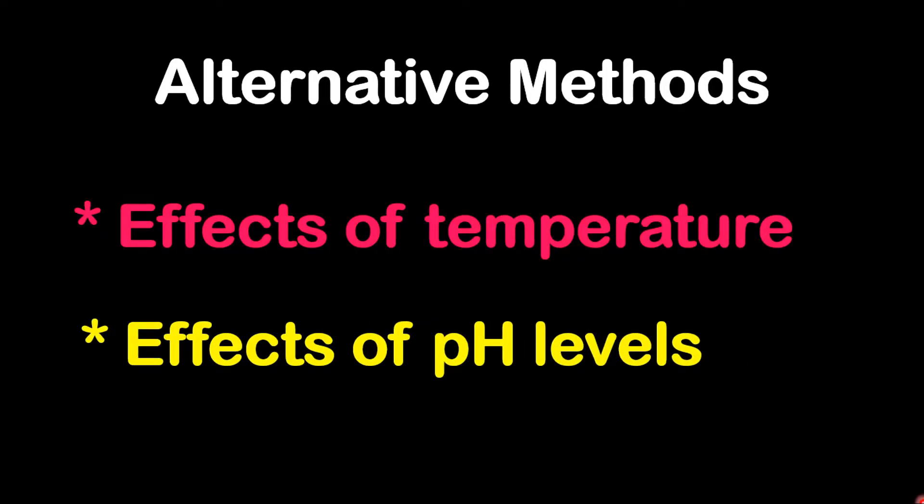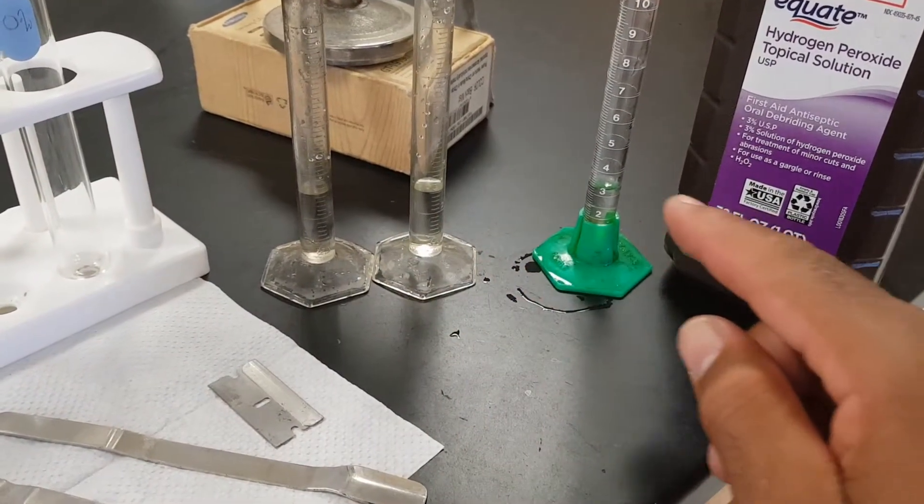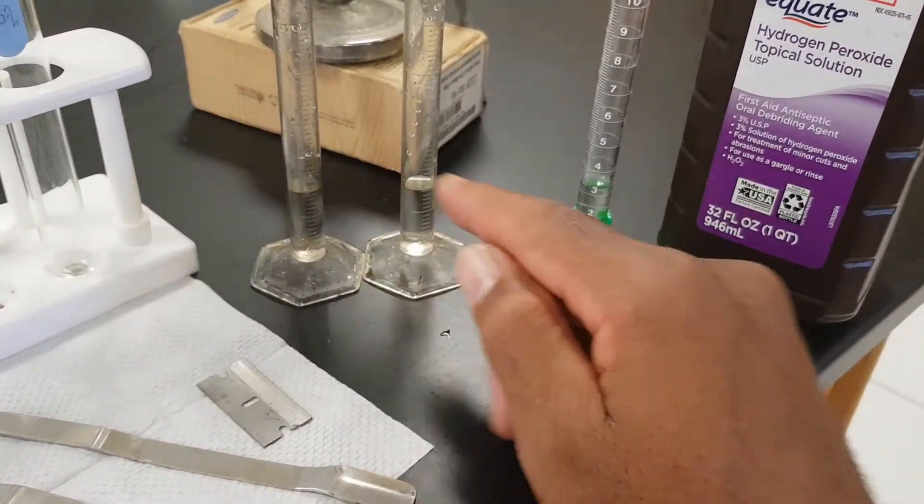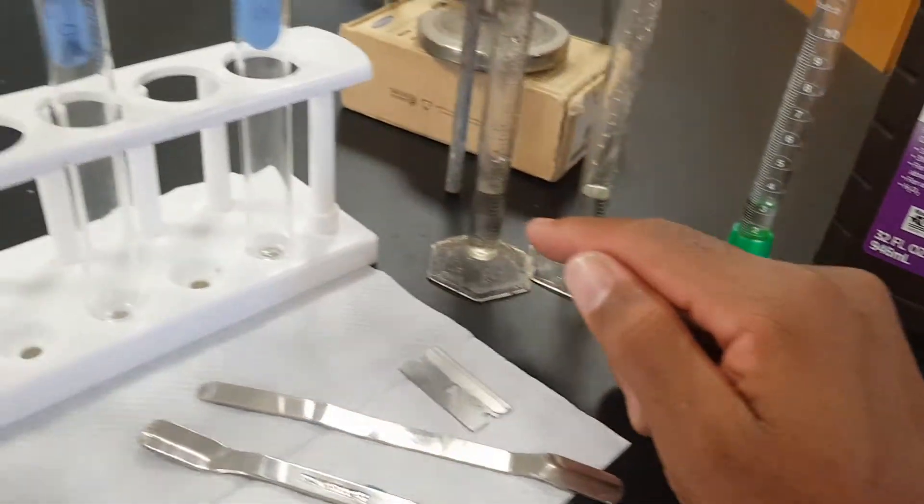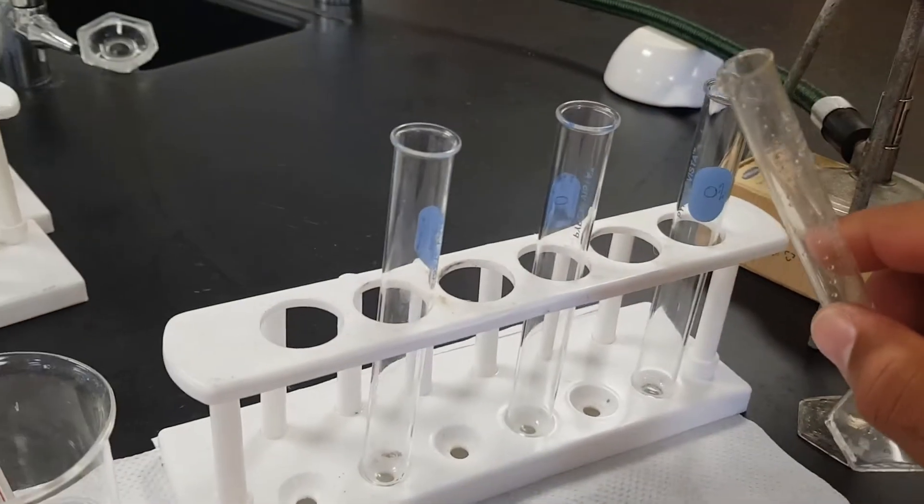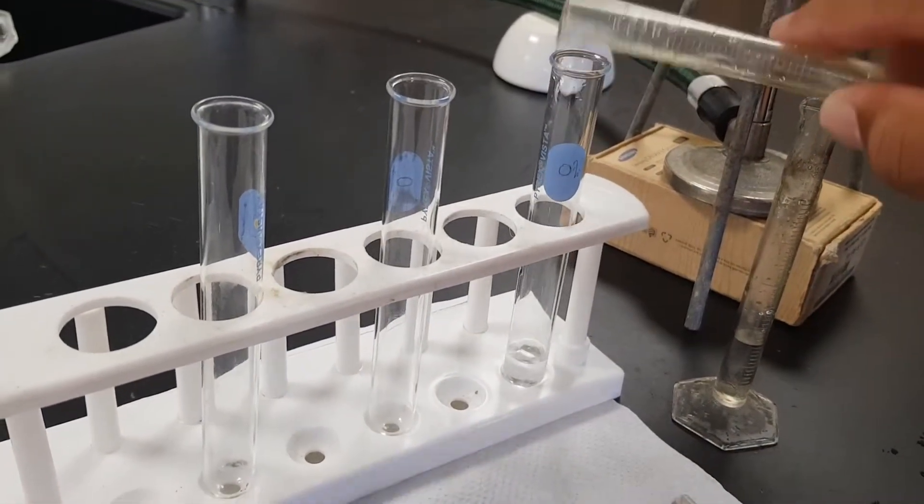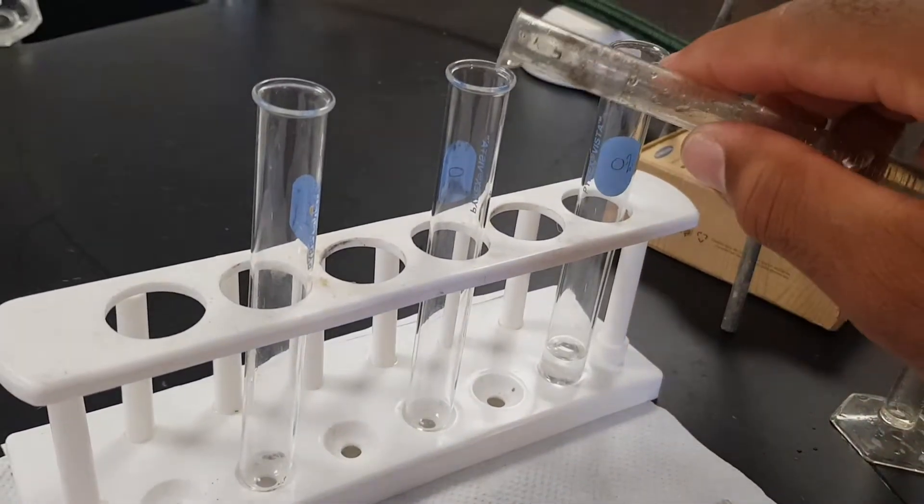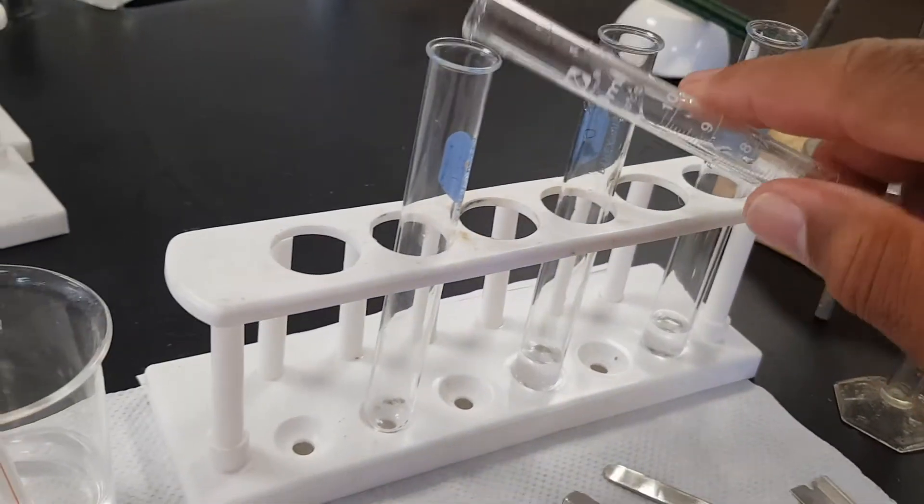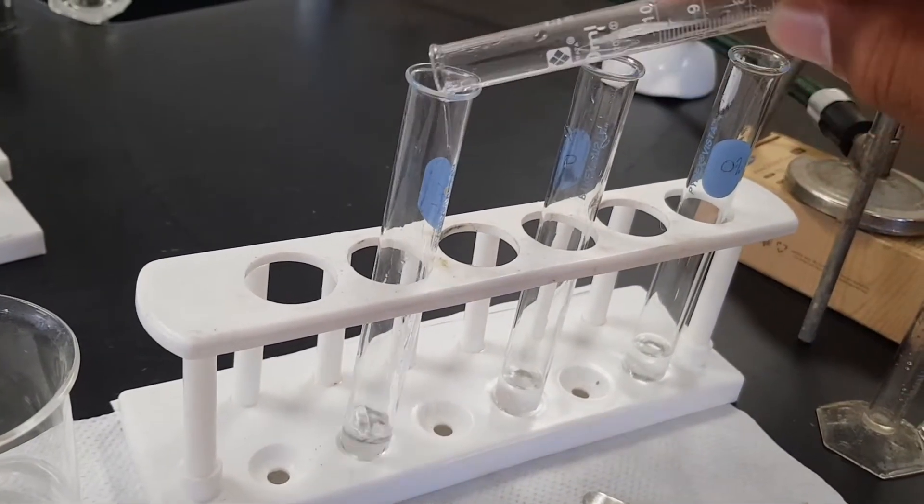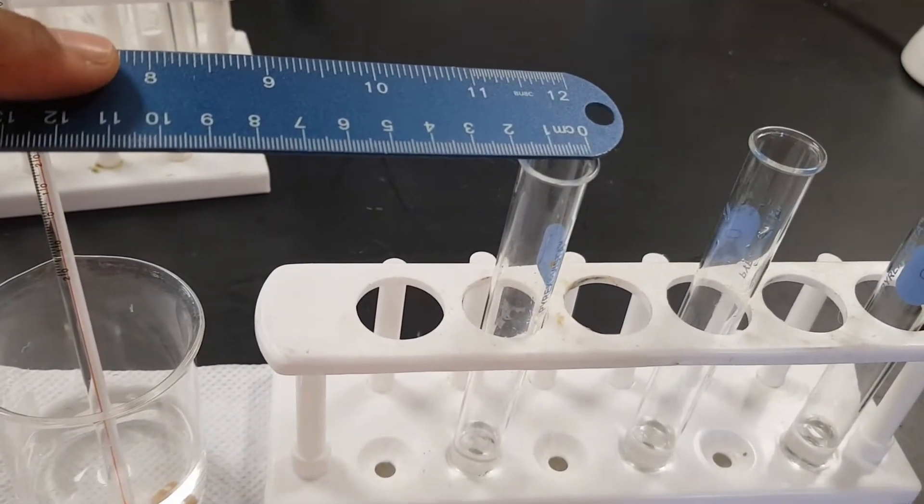Next step you want to do is to pour hydrogen peroxide into three different measuring cylinders at 3 ml. I'm going to pour it into each test tube.